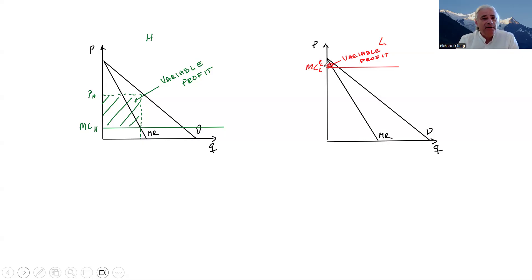So we could think of the fixed cost of entering the industry as paying for a lottery ticket. If you're lucky, you get a low marginal cost. If you're less lucky, you get a high marginal cost.